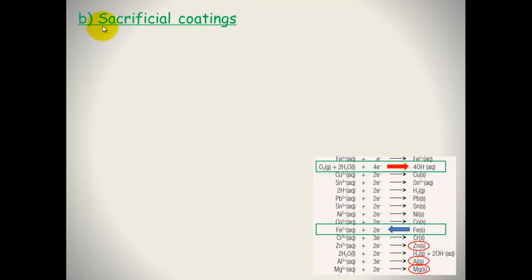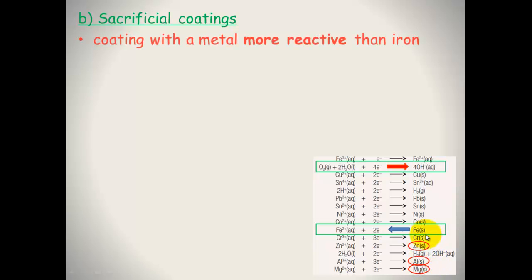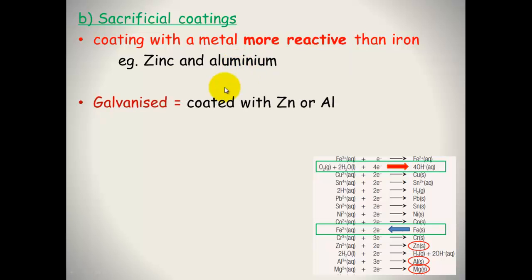The other way to coat it is a sacrificial coating. This is much more effective. If we use a stronger reductant to coat the iron, we don't have to worry about scratching. So we're using a more reactive metal. Zinc and aluminum are the two common ones that are used. If something is coated with those, they're said to be galvanized. You may have heard of galvanized metal before. If scratching occurs, that's okay, because the zinc, aluminum, or magnesium will act as the sacrificial anode.